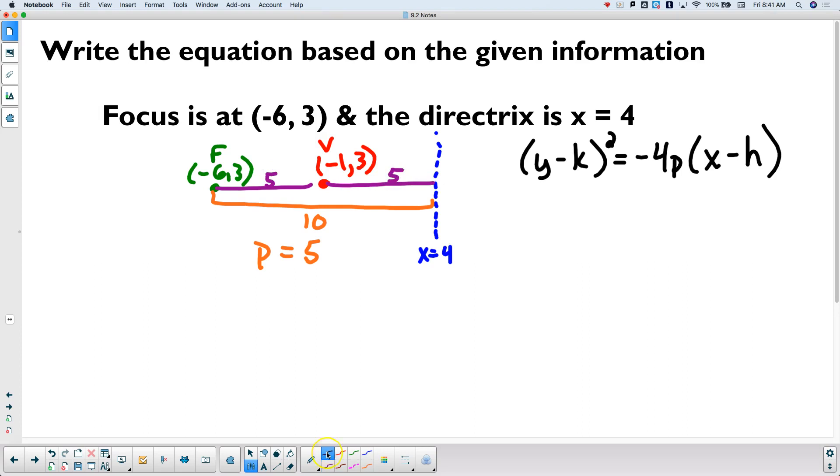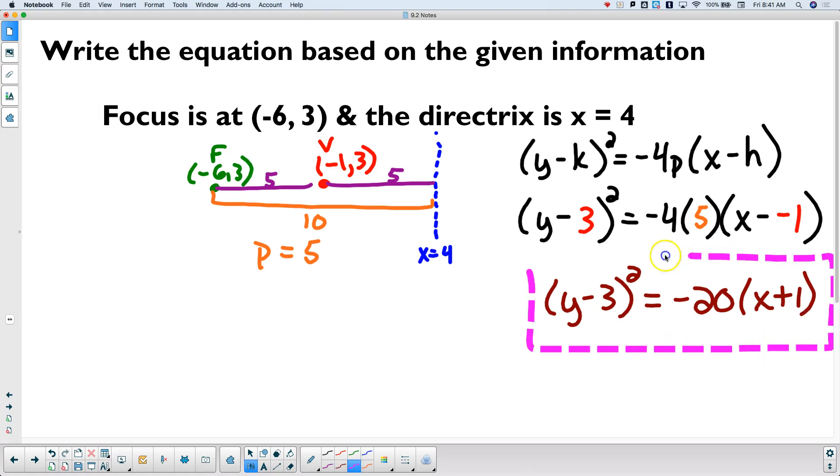Now, I've got enough. Now, it's going to be y minus 3 quantity squared equals negative 4 times p is 5 times x minus h is negative 1. And then, make it look nice and pretty, y minus 3 quantity squared equals negative 20 times the quantity x plus 1. So, you will be given 2 of the 3 focus, vertex, directrix. We've just now done one example of each of the 3 types of problems that you could get.